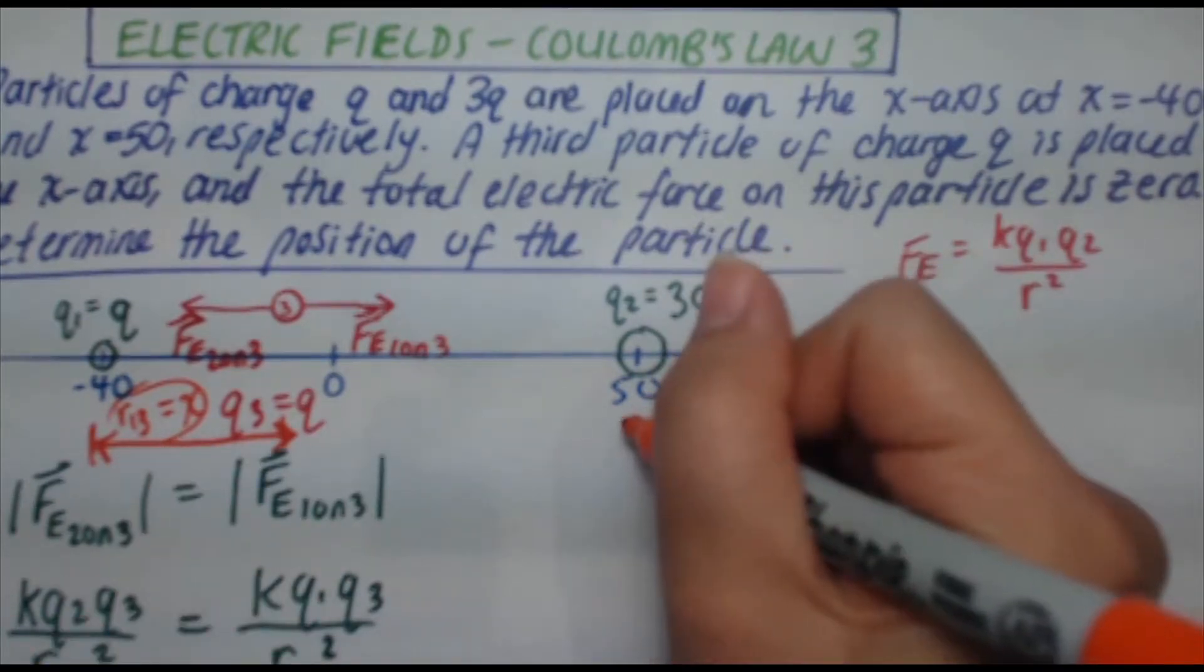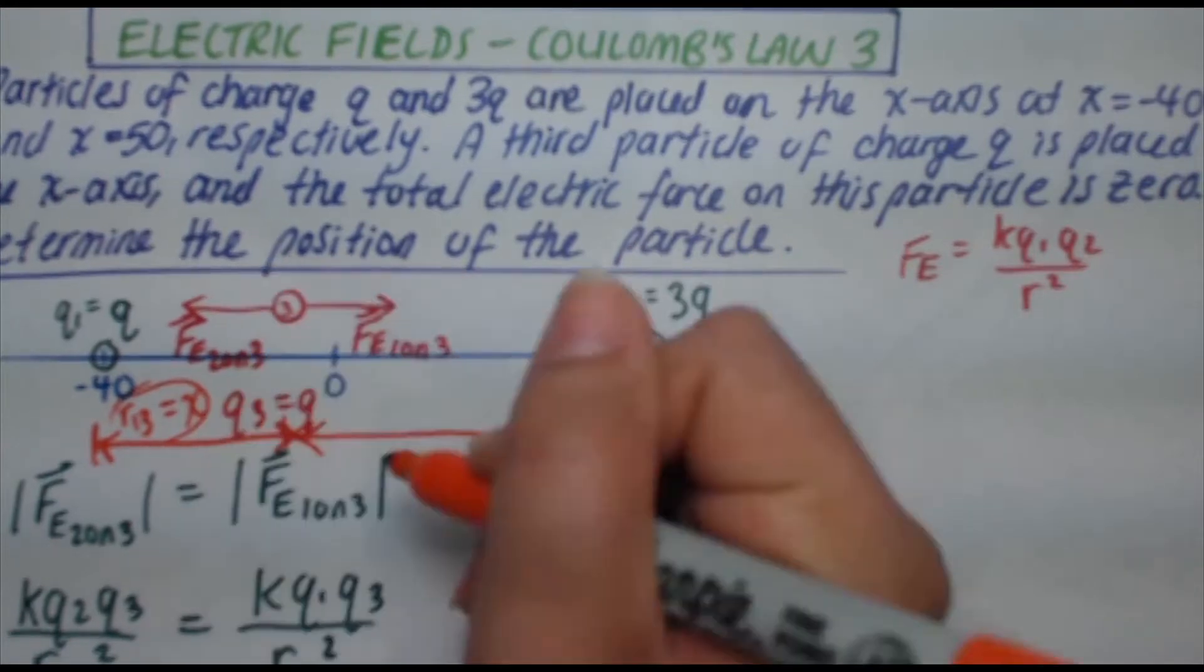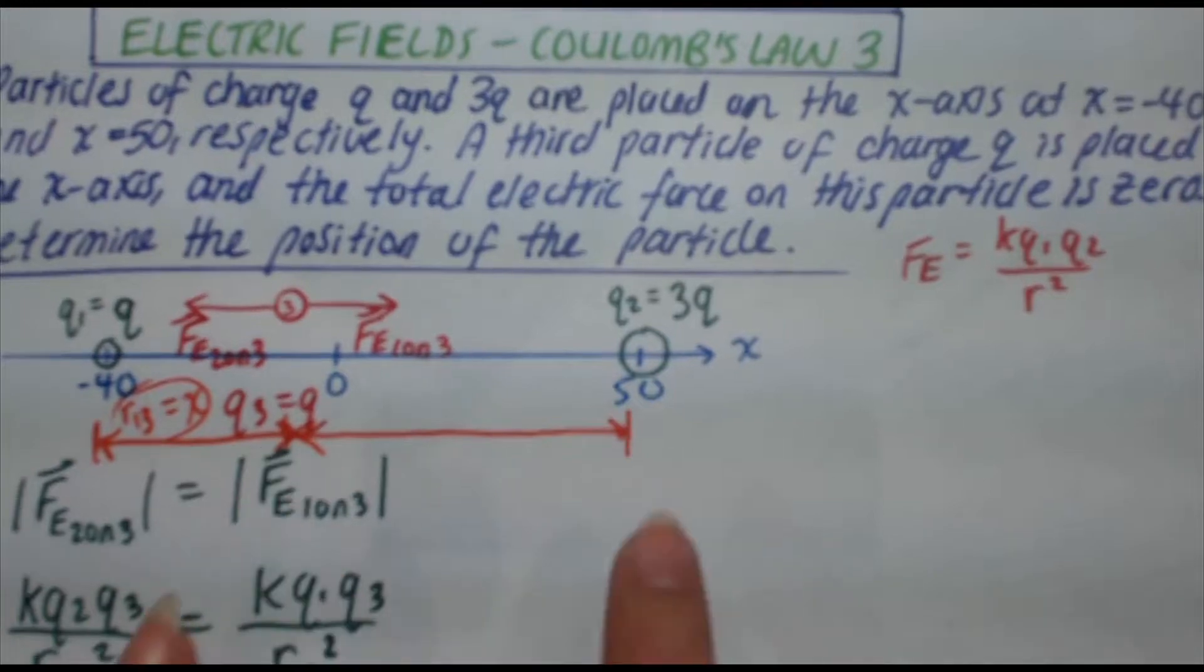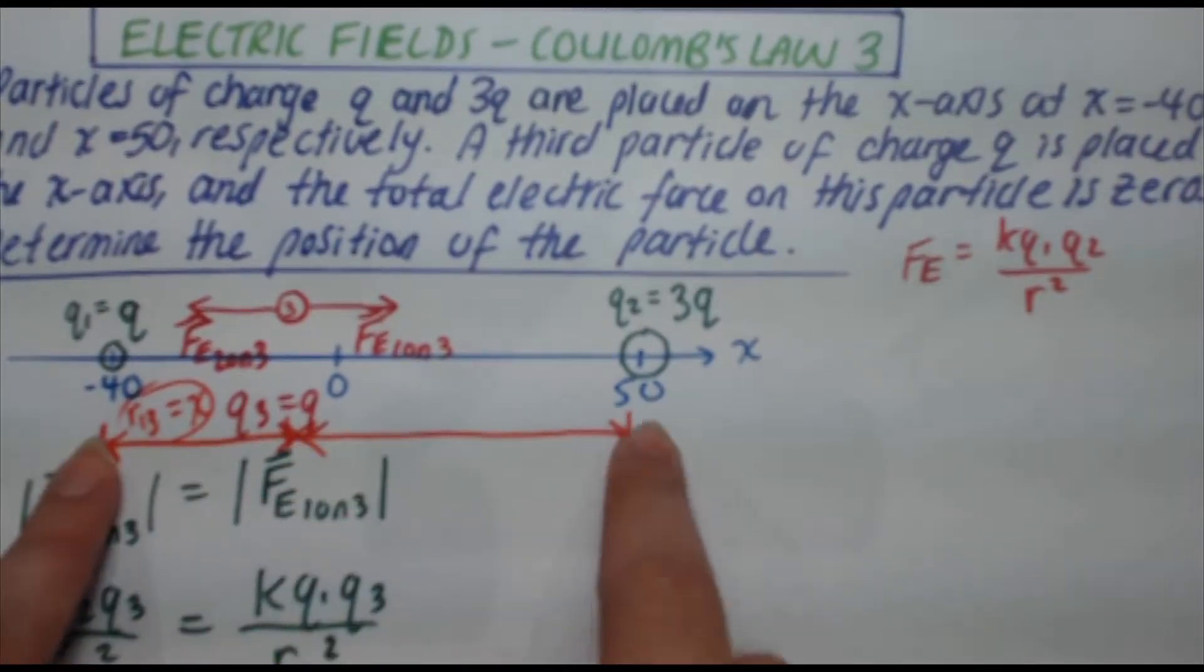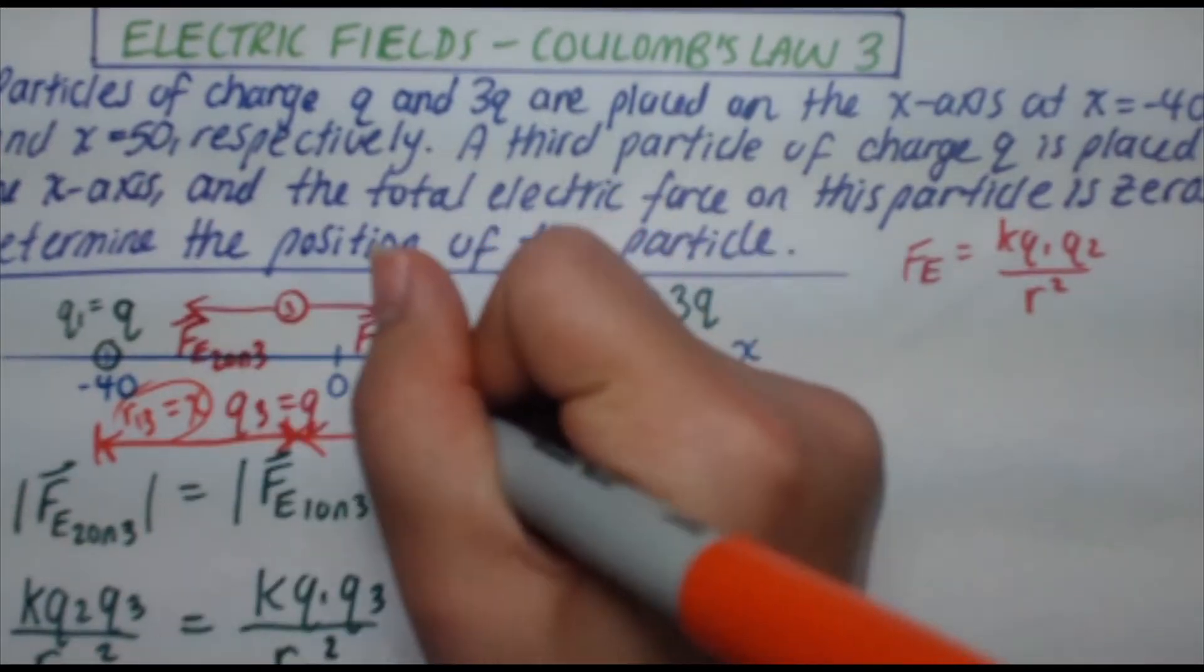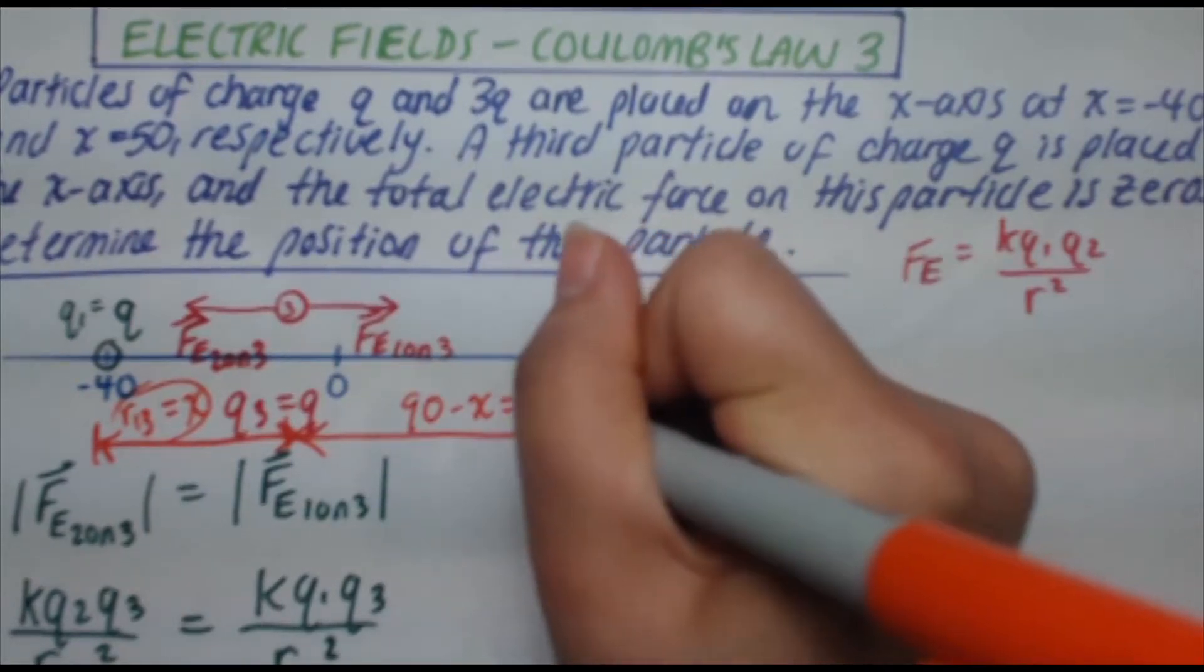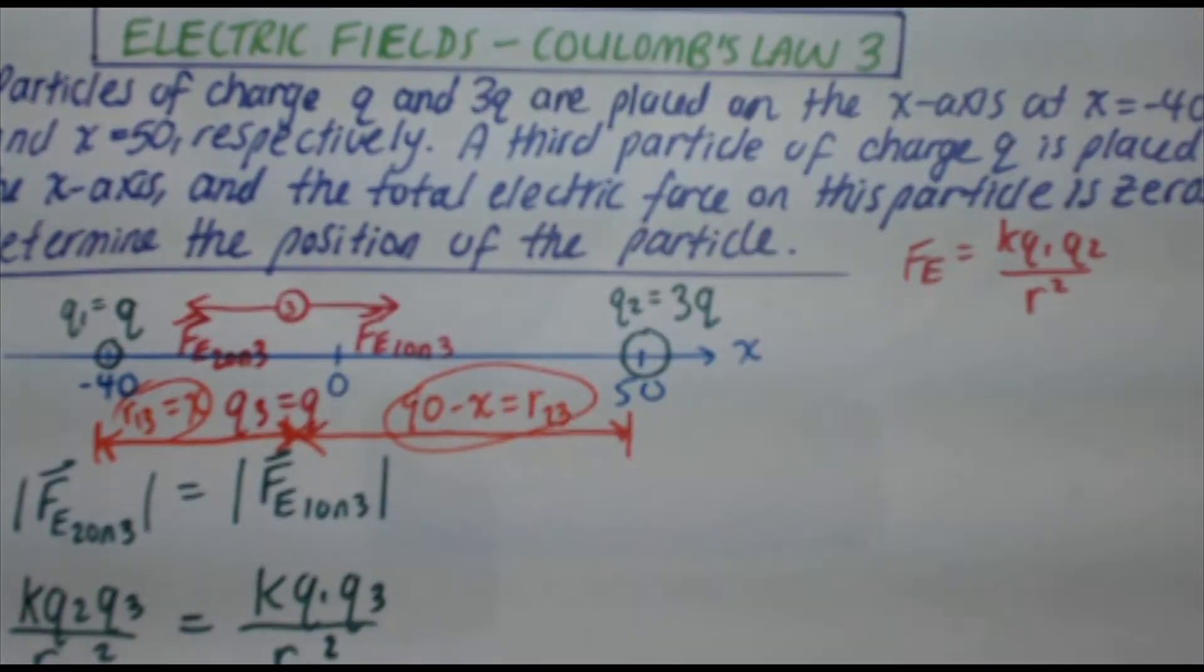Now, if that's x, that means the remainder, this distance right here, is going to be the total distance minus this portion, right? This length is equal to the total minus this part. The total is 50 from this side, 40 from that side, the total is 90. So therefore, this distance right here is going to be 90 minus x, and that is going to be r23. These are going to come in handy when we start plugging it into our formula.